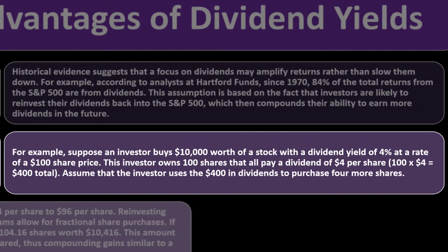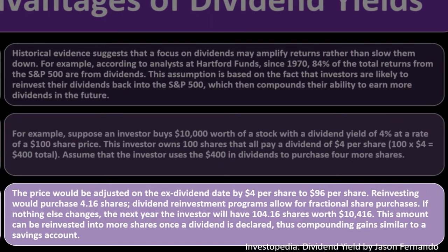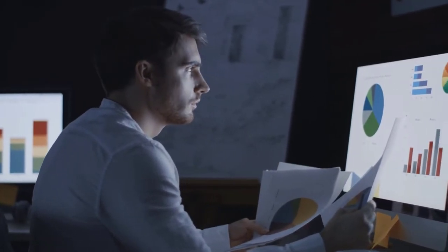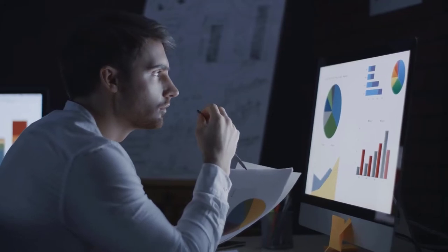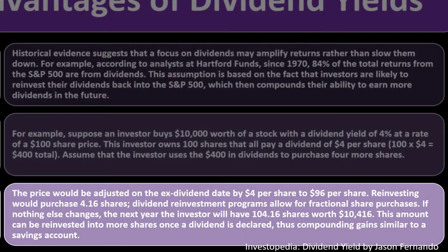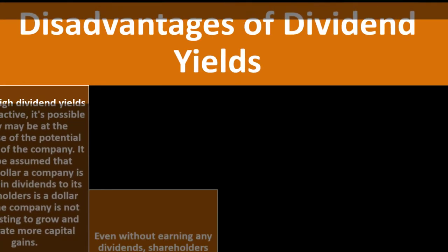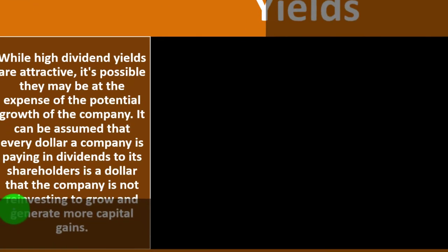Assume the investor uses the $400 in dividends to purchase more shares. The price is adjusted on the ex-dividend date by $4 per share to $96 per share; reinvested, $400 would purchase 4.16 shares. Dividend reinvestment programs allow fractional share purchases, making it easy for investors to let the money automatically roll over. If nothing else changes, the next year the investor will have 104.16 shares worth $10,416. This amount can be reinvested into more shares once a dividend is declared, thus compounding gains — similar to a savings account.